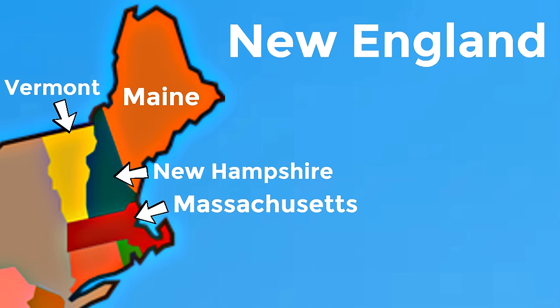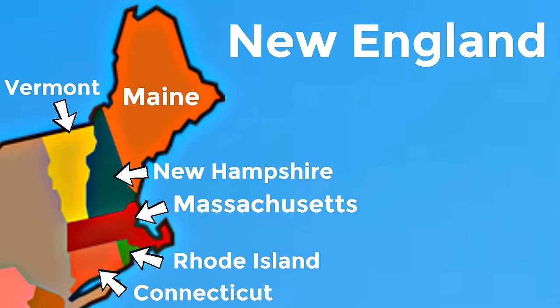Just below Vermont and New Hampshire is the state of Massachusetts — we're making a video about you right now! Below Massachusetts there are two more states: Rhode Island and Connecticut. So these are the six states that belong to the region known as New England.